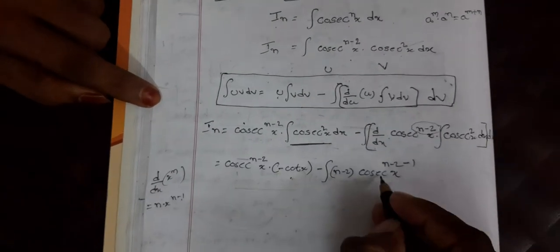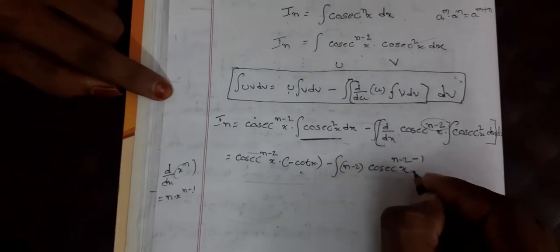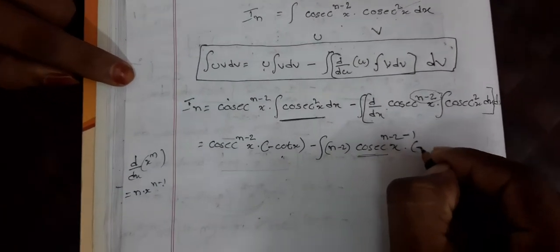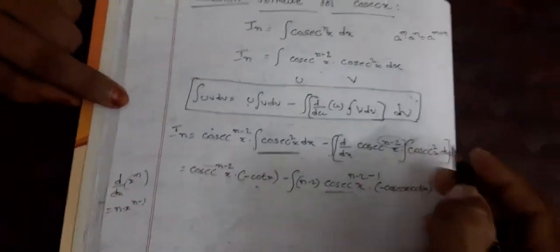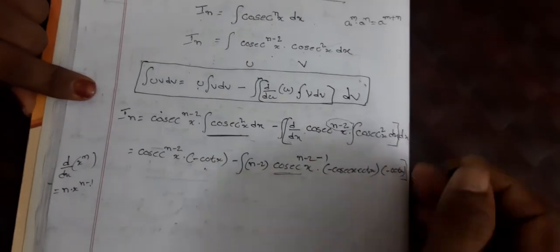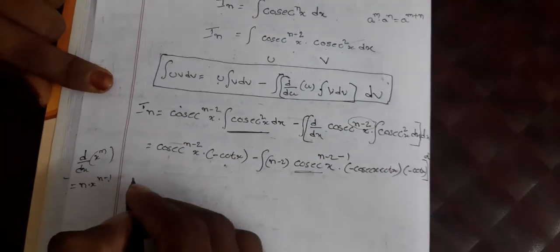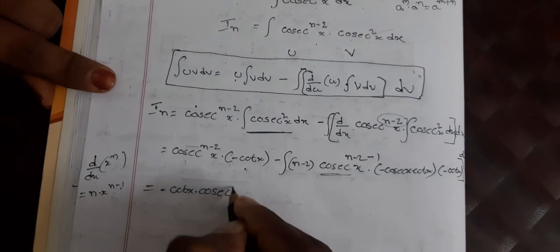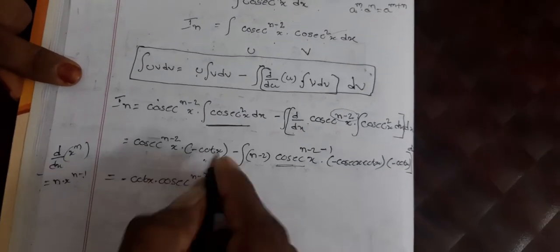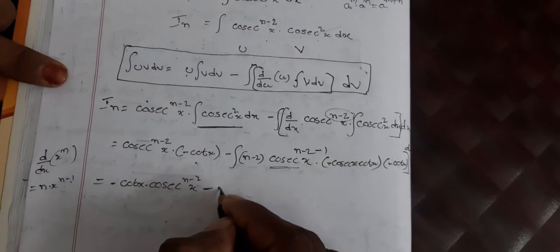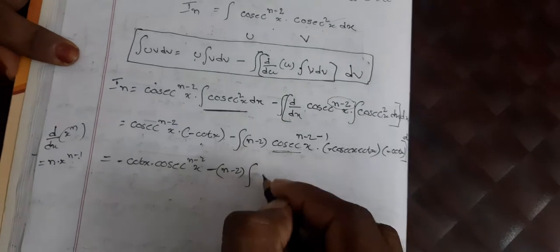The derivative of cosecant(x) brings in −cosecant(x)·cot(x). So the full derivative gives (n−2)·cosecant^(n-3)(x) · (−cosecant(x)·cot(x)). This comes into the integral along with −cot(x). That gives us: minus cot(x)·cosecant^(n-2)(x).